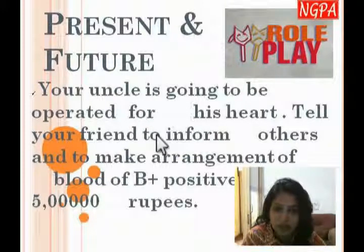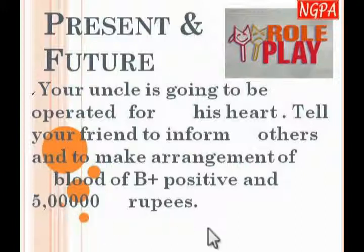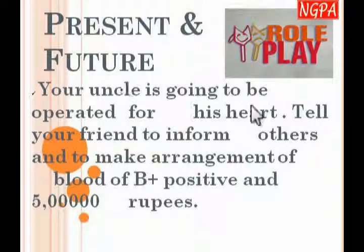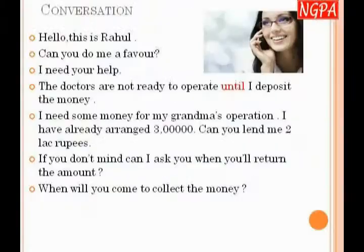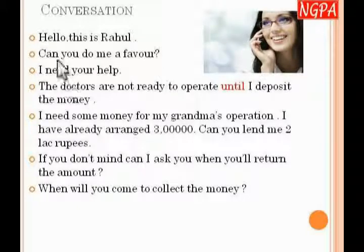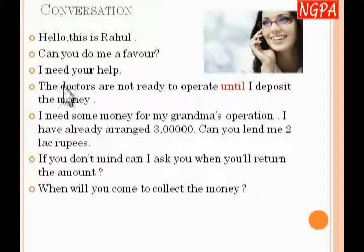The first situation is: your uncle is going to be operated on for his heart. Tell your friend to inform others and to make arrangements for B-positive blood or five lakh rupees. You have to give your friend a call. You will start like this: 'Hello, this is Rahul. Can you do me a favor?' Before you seek a favor from anybody, you say 'Can you do me a favor?'